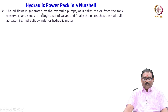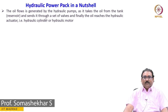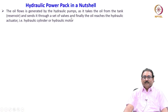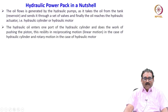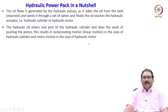The oil flow is generated by the hydraulic pumps as it takes the oil from the tank and sends it through a set of valves. Finally, the oil reaches the hydraulic actuator — that is cylinders and motors. The hydraulic oil enters one part of the hydraulic cylinder and does the work of pushing the piston. This results in reciprocating motion — linear motion in the case of the hydraulic cylinder, and rotary motion in the case of the hydraulic motor.